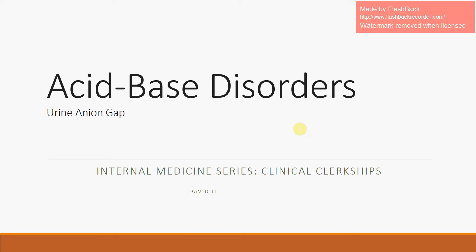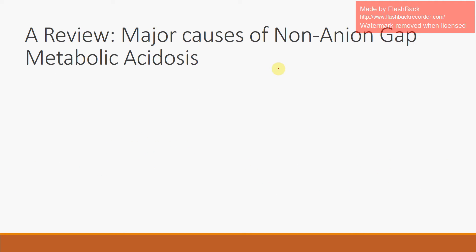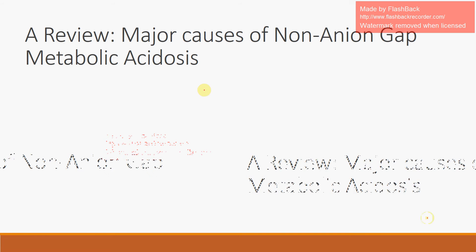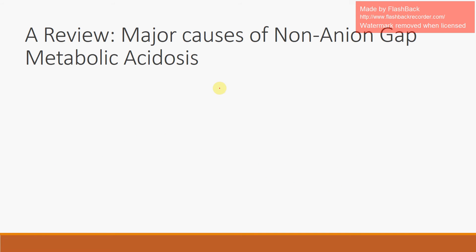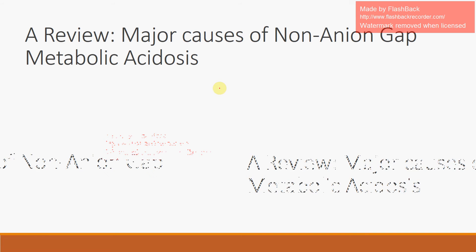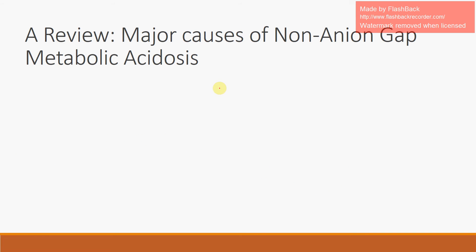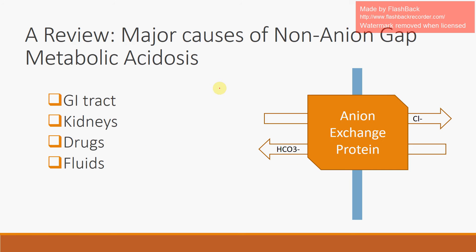Hello and welcome to the internal medicine series for clinical clerkships. Today we'll be discussing acid-base disorders, specifically the urine anion gap. Just a quick review about the major causes of non-anion gap metabolic acidosis. When we're talking about a urine anion gap, it's usually in the setting of a non-anion gap metabolic acidosis.